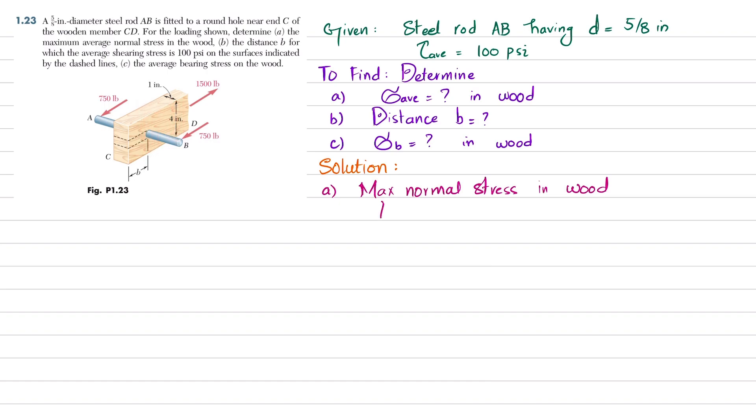So net area will be equal to 4 minus diameter into width. In tension we subtract this hole because only this portion is taking the load. That's why 4 minus 5/8 multiplied by width, which is 1 inch, gives you net area which is 3.375 square inches.